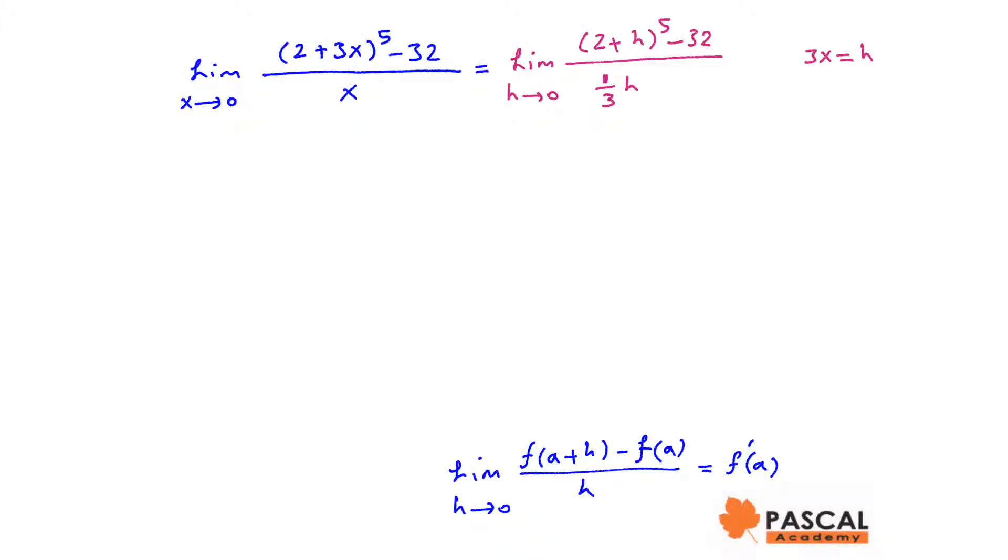Which is 3 times limit of 2 plus h to the power of 5 minus 32 over h as h approaches 0.